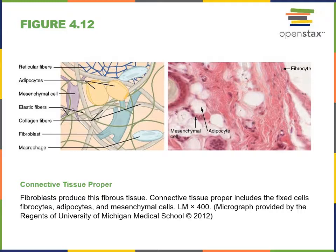Specialized cells found in connective tissue proper are called fibroblasts, and fibroblasts mature into fibrocytes. Fibroblasts produce the fibers of the extracellular matrix.